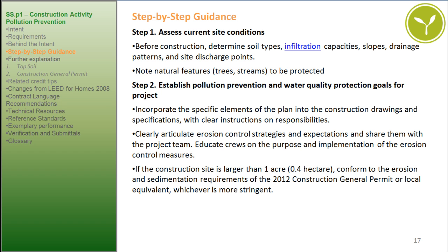Step-by-Step Guidance. Step 1: Assess Current Site Conditions. Before construction, determine soil types, infiltration capacities, slopes, drainage patterns, and site discharge points. Also note natural features such as trees and streams to be protected.